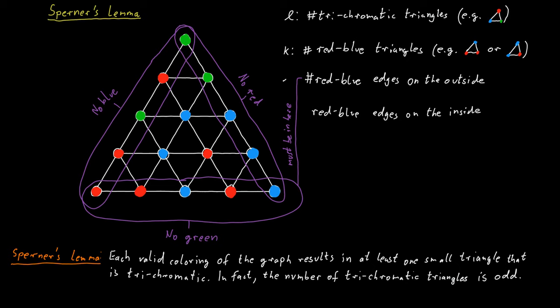Now let the number of red-blue edges on the outside be x. And then we can observe that this x, this number x must be odd. At the bottom of the large triangle we have red all the way to the left and blue all the way to the right.